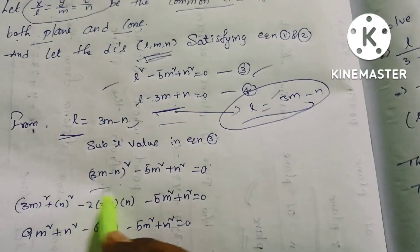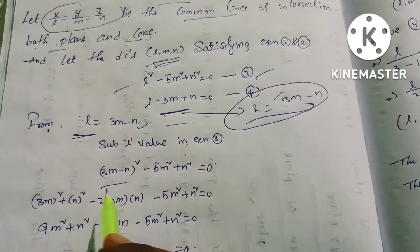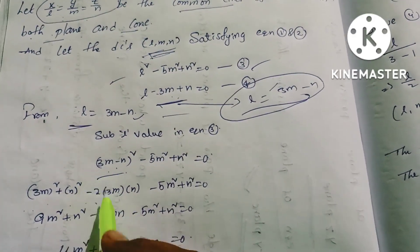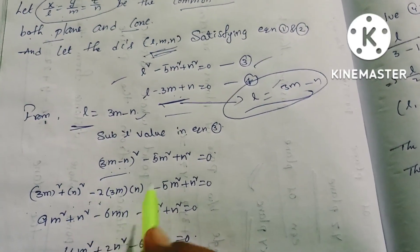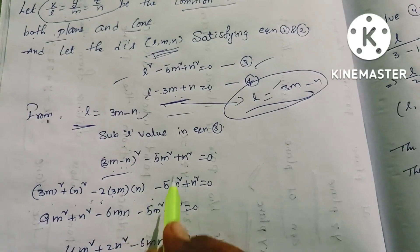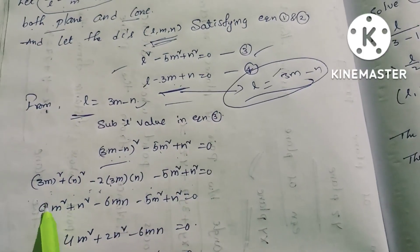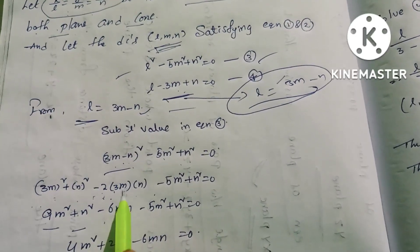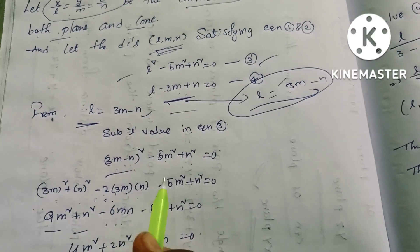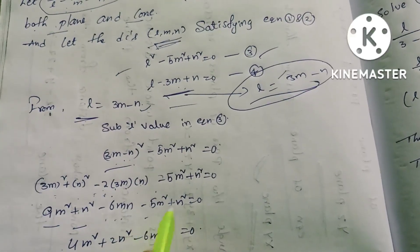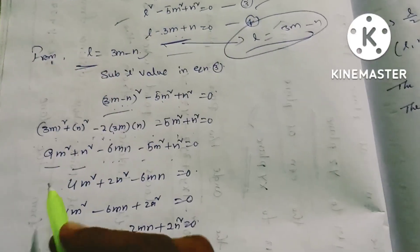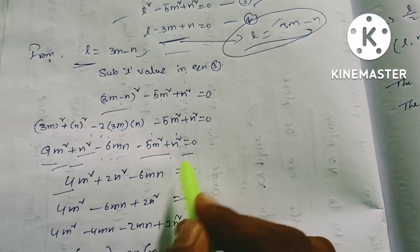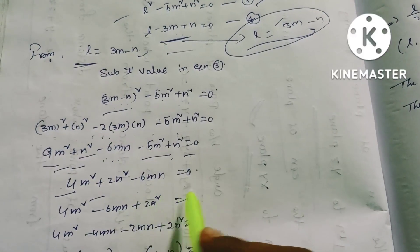Expanding using (a - b)² = a² - 2ab + b²: (3M)² - 2(3M)(N) + N² - 5M² + N² = 0, which gives 9M² - 6MN + N² - 5M² + N² = 0. So 4M² - 6MN + 2N² = 0.